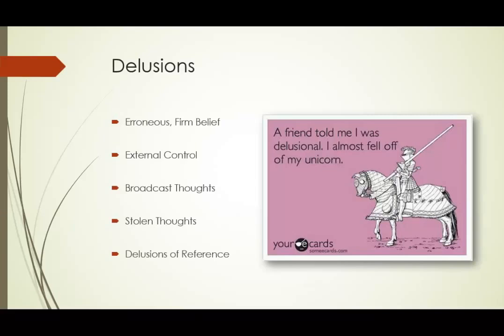We can have all sorts of different delusions: delusions of persecution, delusions of grandeur, for instance. We'll mention here delusions of reference. It's a belief that one's thoughts, feelings, or actions are being controlled externally. Second, made feelings or impulses — a belief that one's private thoughts are being broadcast indiscriminately to others. This is called thought broadcasting.